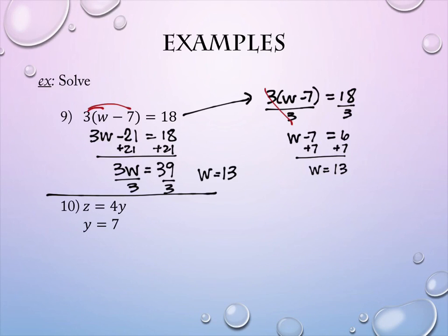Number 10 is a little bit different. On number 10, we're given two equations. One of them has two variables in it: z equals 4y. The other equation tells you what y is. So this is a substitution kind of an equation pair. You're going to take what they tell you y is, namely 7, and you're going to evaluate it into the other equation. So we're going to take this equation, z equals 4, and we're going to substitute the 7 in for y. And that means that z will equal 28.